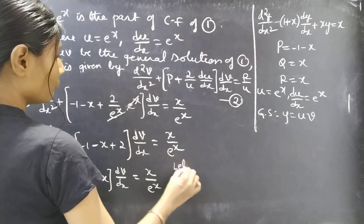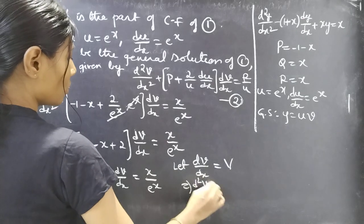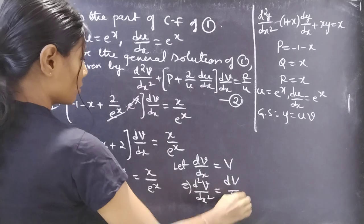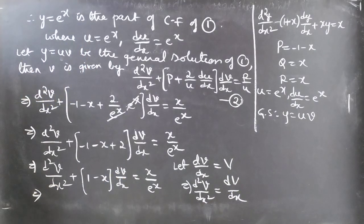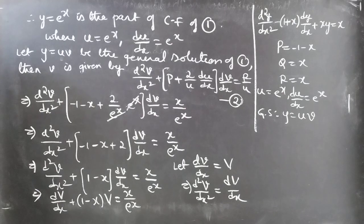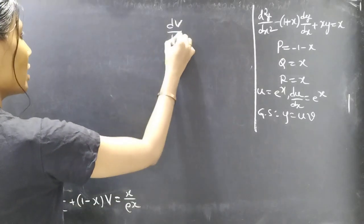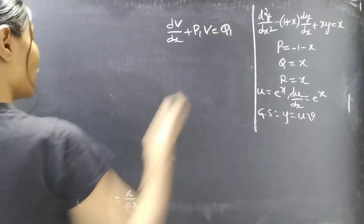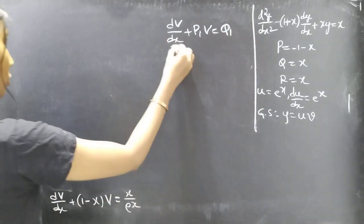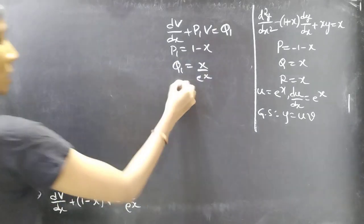This is a linear equation in V and x. Let dV/dx = capital V, then d²V/dx² = dV/dx (derivative of capital V). The equation becomes: dV/dx + (1-x)·V = x/eˣ, which is a linear equation in V and x. Comparing with the standard form dV/dx + P₁V = Q₁, we get P₁ = (1-x) and Q₁ = x/eˣ.